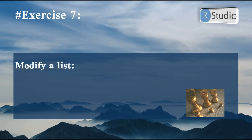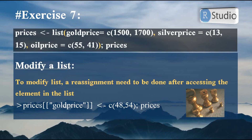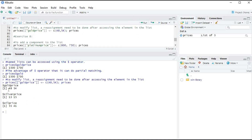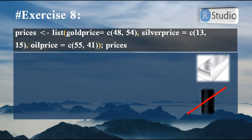In exercise seven we will learn how to modify a list. To modify a list, you reassign the element you want to change. In our case we want to change gold price from ounce to gram. We access the gold price element using list_name[['gold price']] with double brackets, then assign a new vector of two numbers representing the gold price in grams for March and April. Running this in RStudio, only the gold price values are changed.